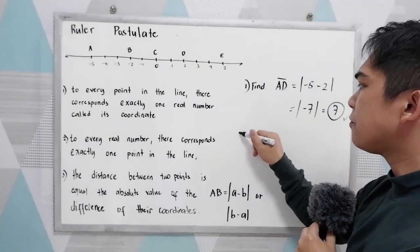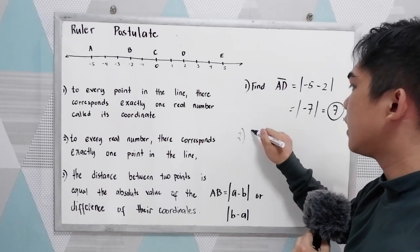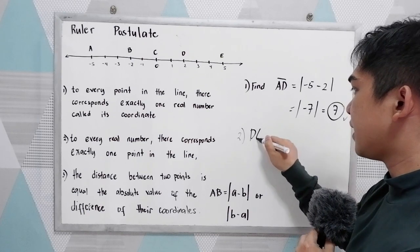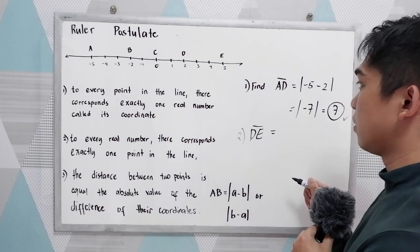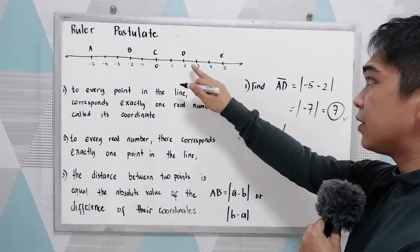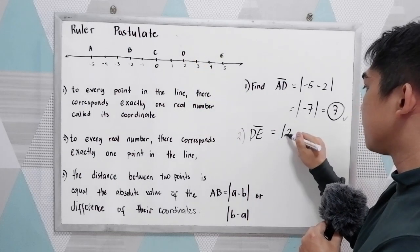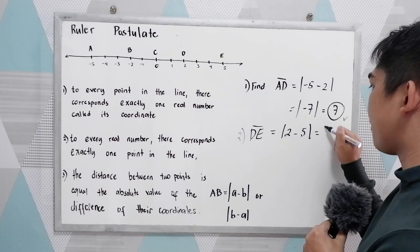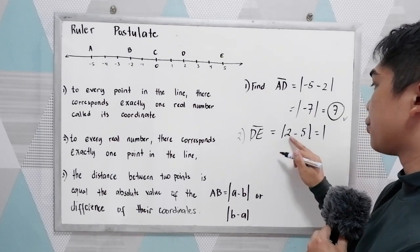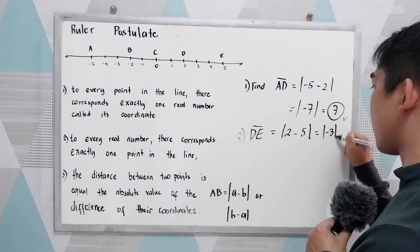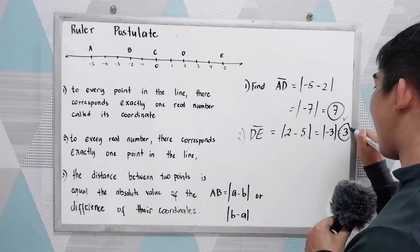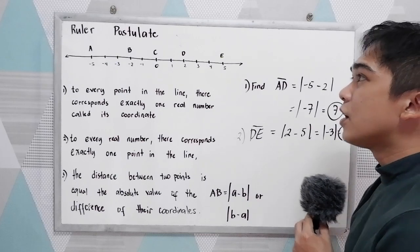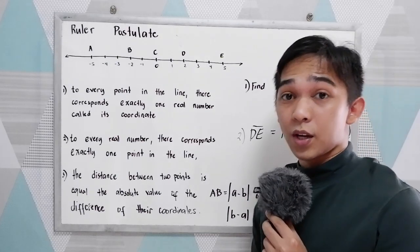Another example: find the distance between D and E. We have the absolute value of D minus E, which is the absolute value of 2 minus 5, equaling the absolute value of negative 3, which gives us positive 3. Counting: 1, 2, 3. So that's the ruler postulate.